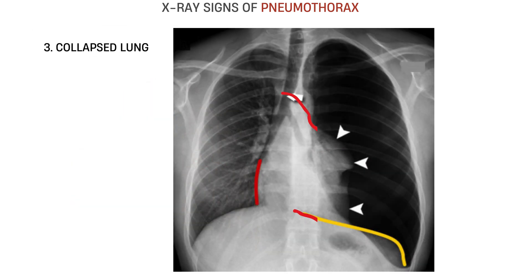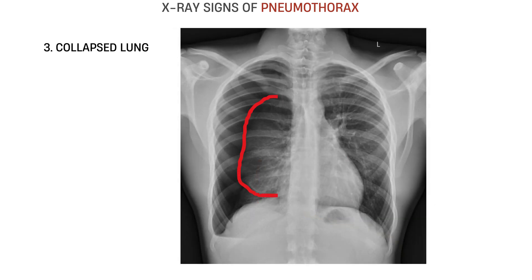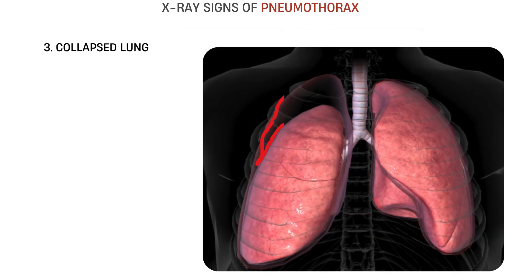Third, collapsed lung appearance. As air accumulates, it pushes the lung inward. The lung may appear hazy, denser, and shriveled toward the hilum — this is the actual collapsed lung. In large pneumothoraxes, it can look like a dense, soft tissue ball in the middle of the chest. The smaller the visible lung, the larger the pneumothorax. But even small pneumothoraxes can be dangerous in patients on ventilators.